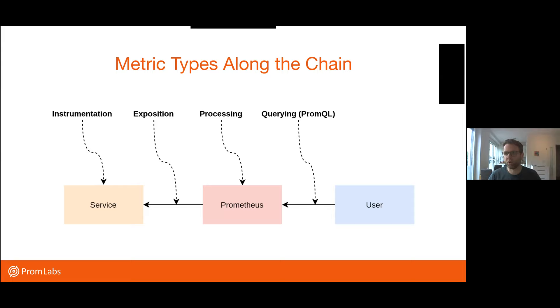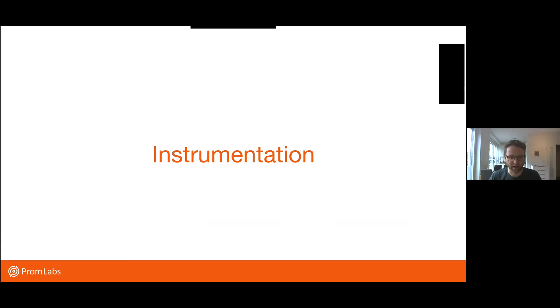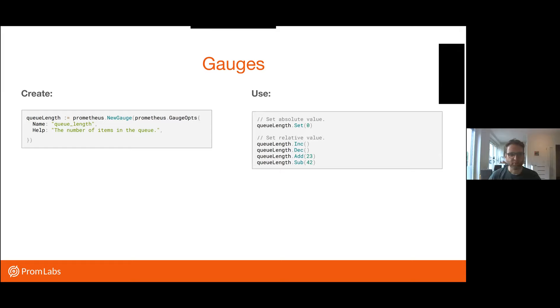So now we want to look at how these different metric types get expressed along this entire chain. When you instrument a service, how they then get exposed over the wire as Prometheus scrapes them, what the Prometheus server does with them after getting them from a target, and then what you need to know when working with these types in PromQL. So the first bit, instrumentation. I'm going by some examples using the Go client library.